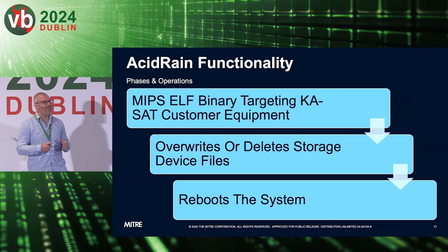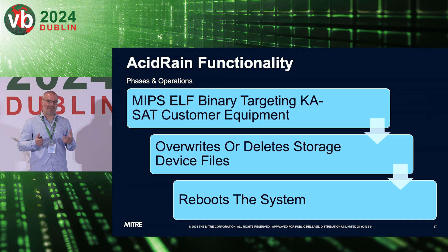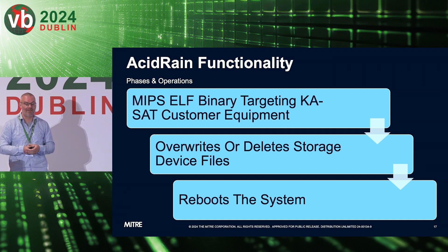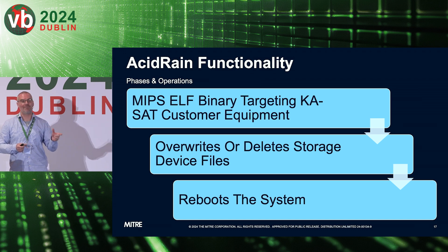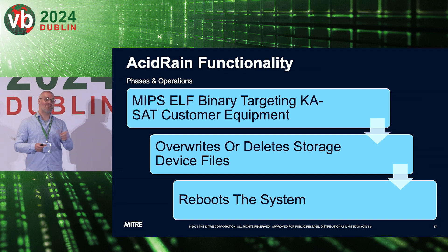From that VPN concentrator access, they migrated to a management server within that network and then further migrated to network operation servers, allowing them to enumerate the nodes connected to the network and then push an AcidRain payload for staging to an FTP server that allowed for further distribution onto KA-SAT modems. AcidRain was a MIPS ELF binary targeting customer equipment — not terribly sophisticated but certainly effective, in that it would overwrite and delete storage devices and device files and then reboot the system.